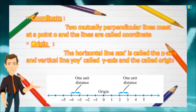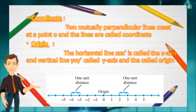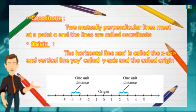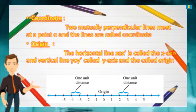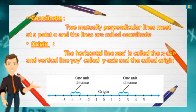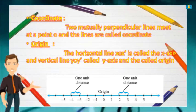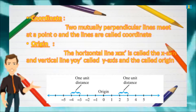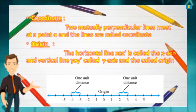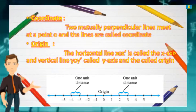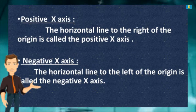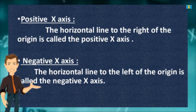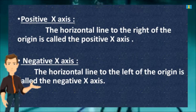Two mutually perpendicular lines meet at a point O, and these lines are called the coordinate axes. The origin is where they meet. The horizontal line XOX' is called the x-axis and the vertical line YOY' is called the y-axis.